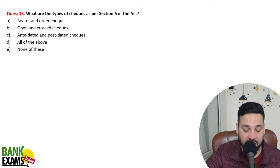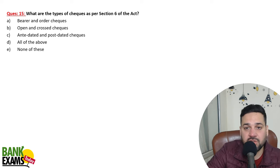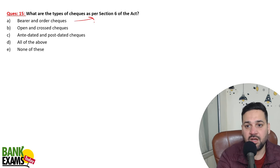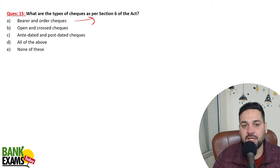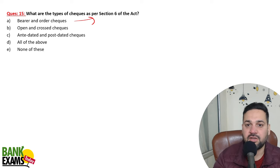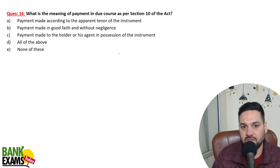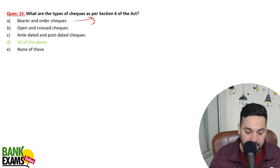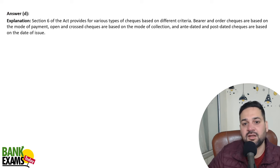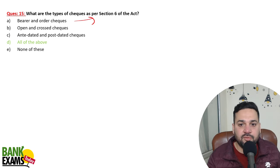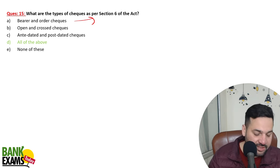What are the types of cheques as per Section 6? There are bearer cheques — where no name is mentioned and the bearer can claim payment — and order cheques, where a specific name is written. There are also open cheques and crossed cheques — in a crossed cheque, two lines are drawn and conditions or modes of collection can be written. Additionally, there are post-dated cheques with a future date and ante-dated cheques with a past date.